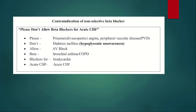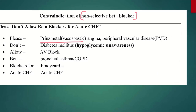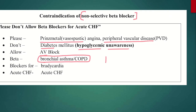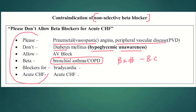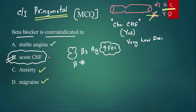Contraindications of non-selective beta blockers: Prinzmetal angina, peripheral vascular disease (vasoconstriction), diabetes (hypoglycemic unawareness), heart block, asthma and COPD (beta-2 blockade causes bronchoconstriction), bradycardia, and acute CHF. You should know the logic and concept rather than just a mnemonic. The answer for this MCQ is acute CHF.